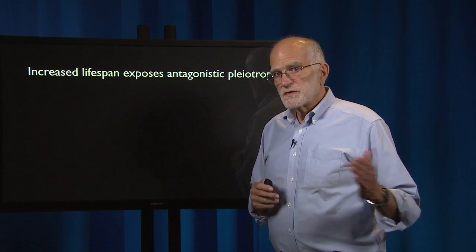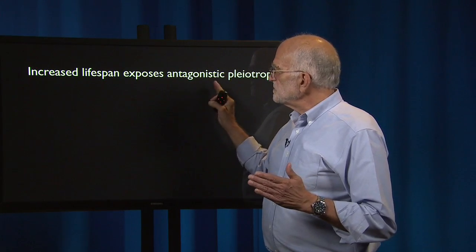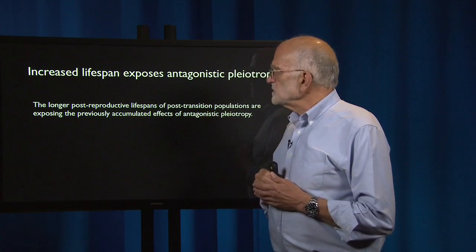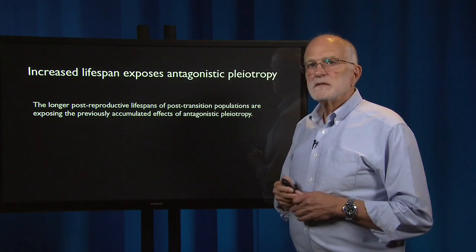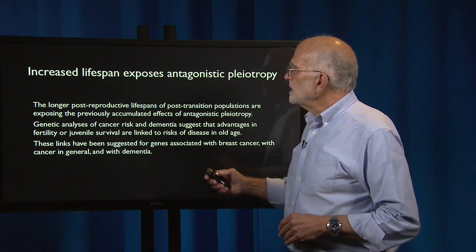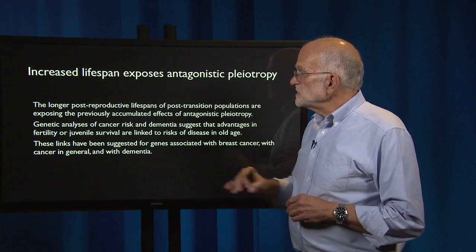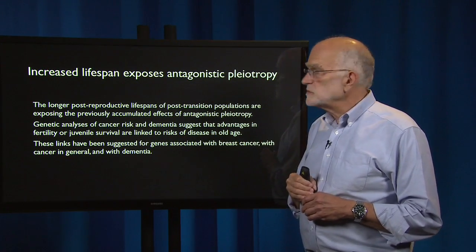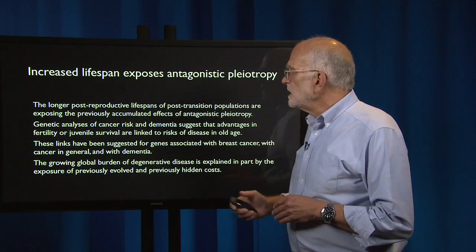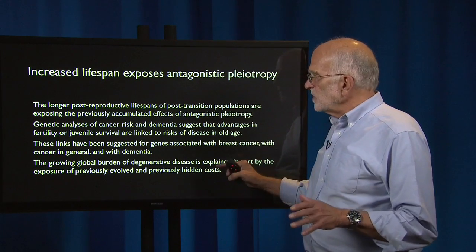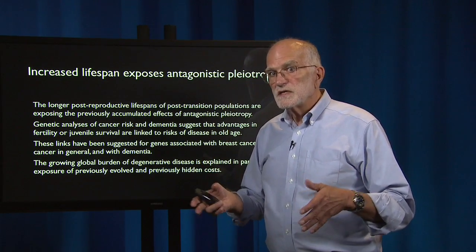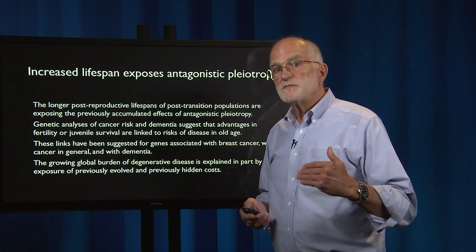Another issue arising from the transition is that increased lifespan is exposing genes with antagonistic pleiotropic effects. The longer post-reproductive lifespans of these populations reveal that we had previously accumulated quite a bit of antagonistic pleiotropy — genes that benefit reproduction early in life but have negative effects late in life. Genetic analyses of cancer risk and dementia suggest that advantages in fertility or juvenile survival are linked to risks of these diseases in old age, including genes associated with breast cancer and dementia. The growing global burden of degenerative disease is explained in part by these previously hidden costs, now exposed by mismatch to a new kind of environment.